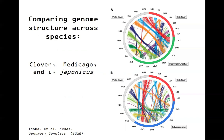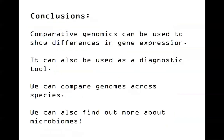Comparing genome structure shows where all these pieces ultimately landed over evolutionary time. This is another great use of comparative genomics — really, comparing anything you think is interesting enough. In conclusion, this can be used to show differences in gene expression, as a diagnostic tool for cancer, to compare genomes across species, and to find out more about microbiomes.